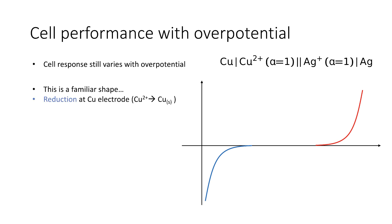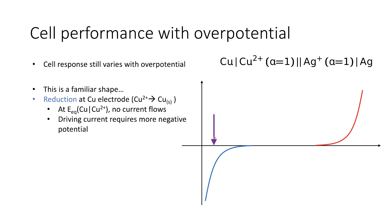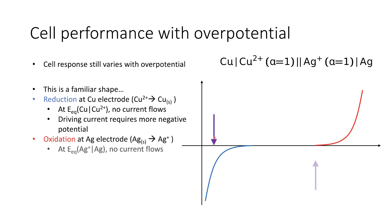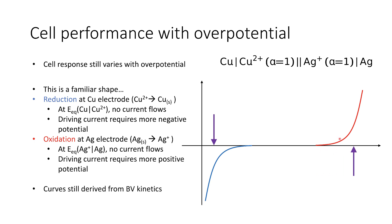We have reduction at the copper electrode — copper ions going to copper solid. At the copper equilibrium potential, no current flows, so to drive current through we must apply a more negative potential. Conversely, at the silver electrode, if we hold the cell at the silver equilibrium potential, no current flows — we must apply an overpotential to overcome the electrode kinetics. Again, the curves are derived from Butler-Volmer kinetics, so are fundamentally exponential.